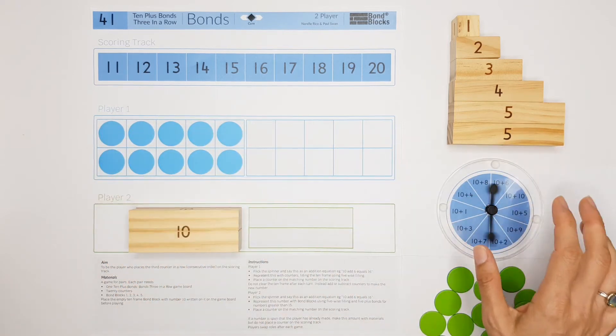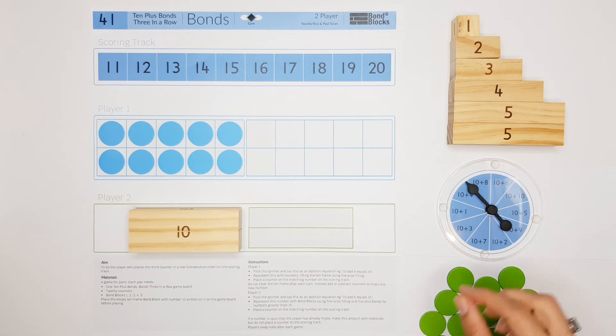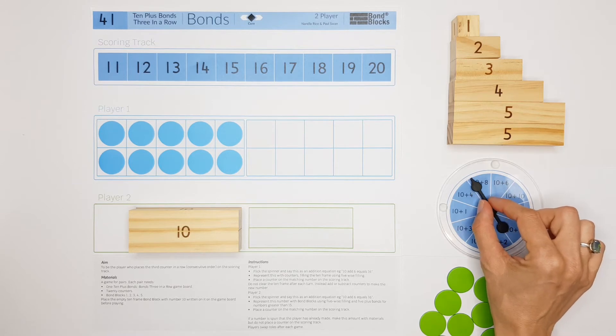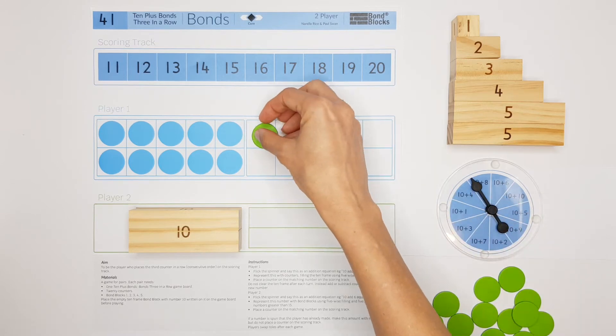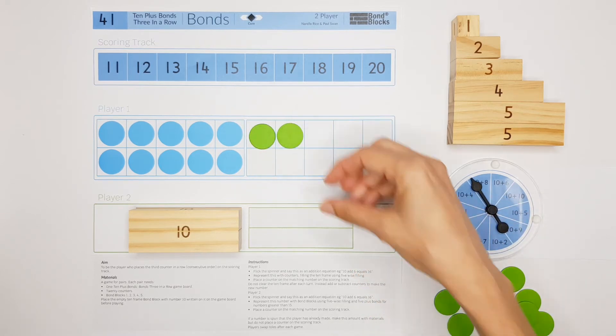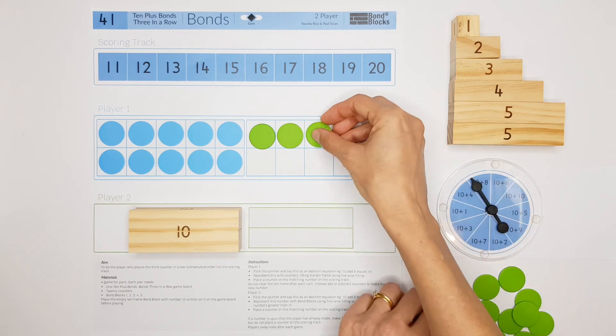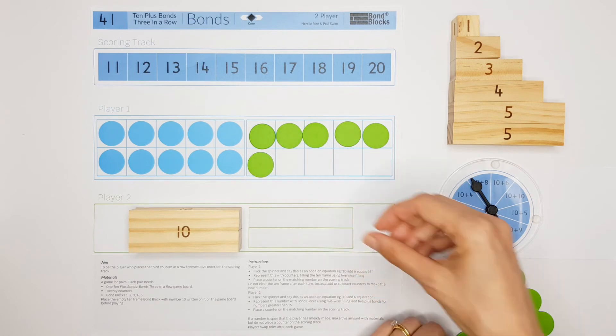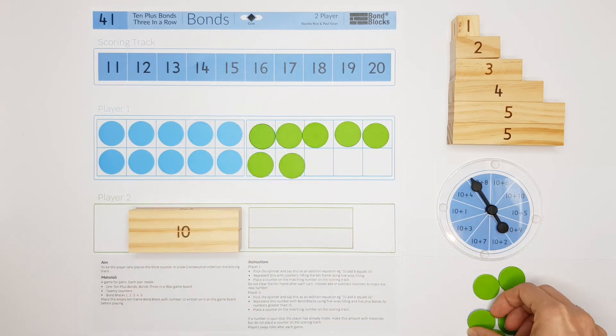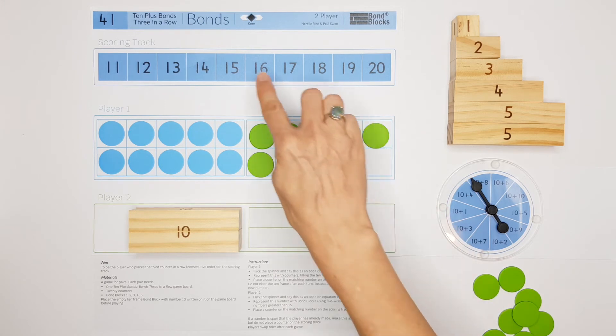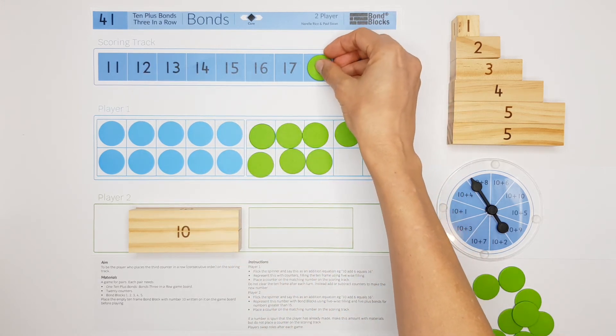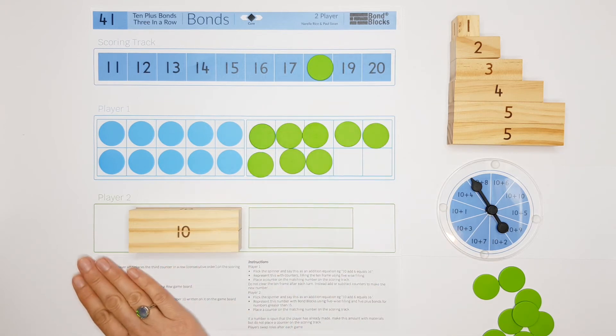Player one goes first. They spin and say the build as 10 add 8 equals 18. Player one fills, remembering to use the five-wise filling: 15, 16, 17, 18. They also place a counter on the scoring track to cover 18.